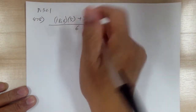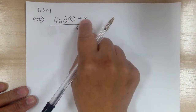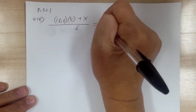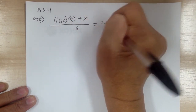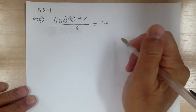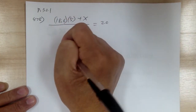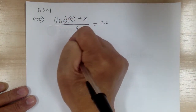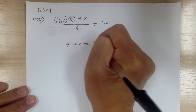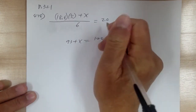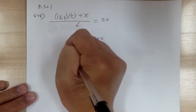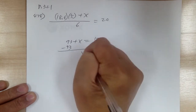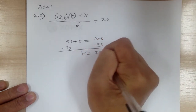You have to divide by 6, because there are 5 games plus 1 more game, so the total is 6. And this has to equal an average of 20. Go ahead and solve. So you get 93 plus x equal to 120, minus 93 from both sides, so x equals 27.